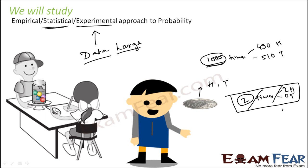These kids are actually performing experiments, and that is nothing but the experimental approach to probability. This kid is trying to find the probability of getting a green ball if you draw one ball from a jar that has balls of different colors. You just understand that probability is nothing but telling what is the possibility of an event. We will perform an experiment and based on the experimental data, we will find the probability.